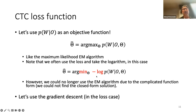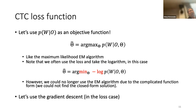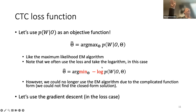The problem is to solve this equation and get the model parameters. However, we can no longer use the EM version because this function form is very complicated — we cannot use the EM algorithm to solve it. Instead, let's use gradient descent. This minimizes the loss, or equivalently, maximizes the objective score.